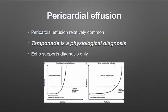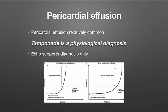The amount of fluid that can cause tamponade can vary depending on the chronicity. With a rapid pericardial effusion, cardiac tamponade physiology can occur at a lower volume. As opposed to a slow pericardial effusion, where the volume can be much higher — a litre or sometimes even more can accumulate in the pericardial sac before you get tamponade physiology, if it accumulates slowly enough.